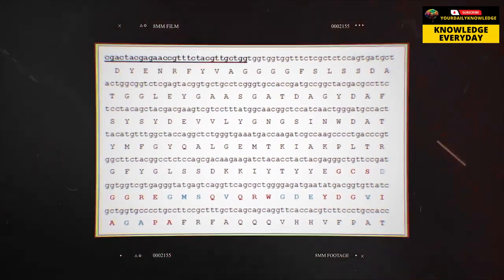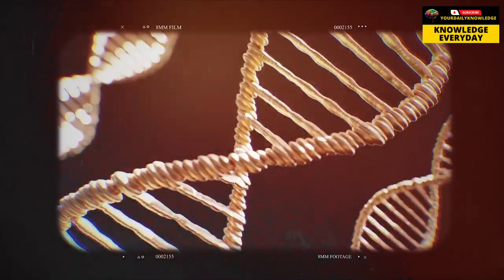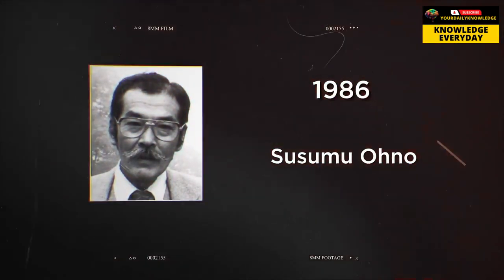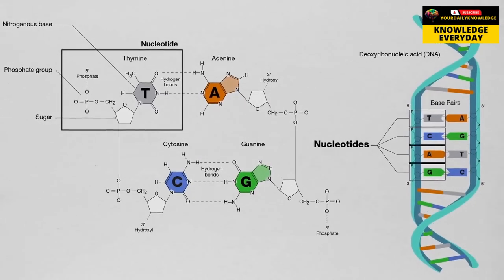Did you know that the nucleotide sequence of DNA can be converted into music? In 1986, the Japanese geneticist Susumu Ono discovered DNA music by converting the nucleotide bases G, T, C, and A to the musical notes A, C, G, and D, respectively.